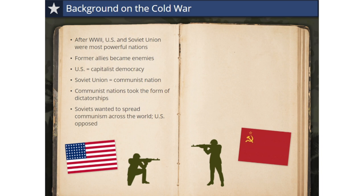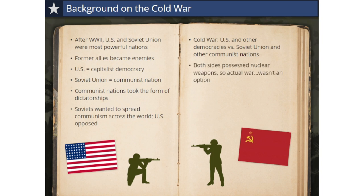The U.S. was determined to oppose this. For almost fifty years, a Cold War existed between the United States and other democracies, and the Soviet Union and other communist nations, which soon included China, the most populous nation on earth. Both sides possessed nuclear weapons and were prepared to use them, so an actual war between them wasn't an option — it might have resulted in the end of human civilization. So the U.S. and Soviet Union never actually went to war directly.